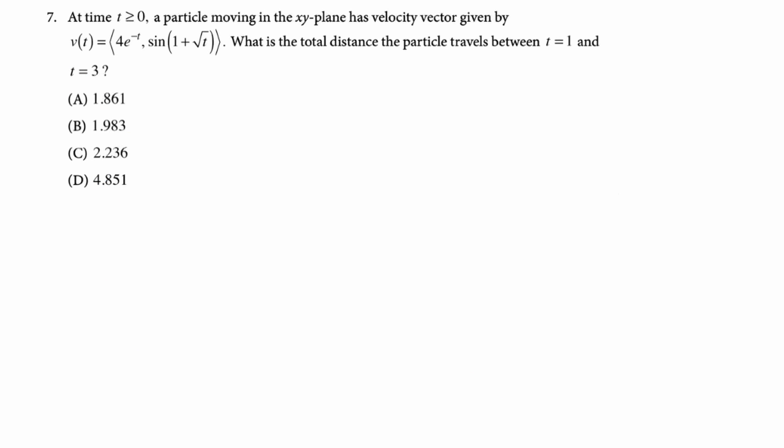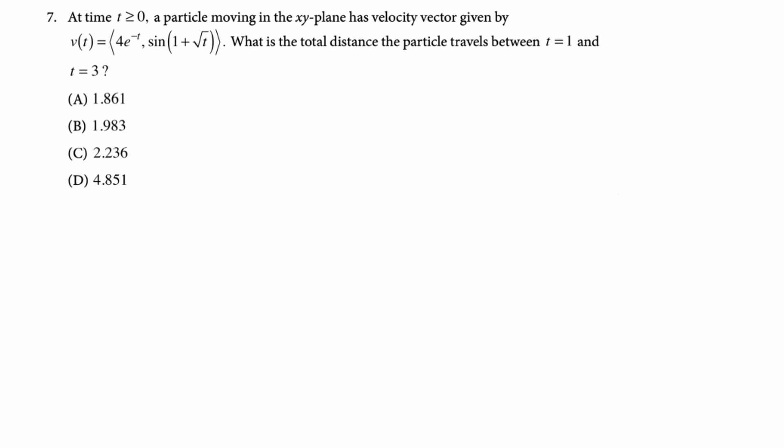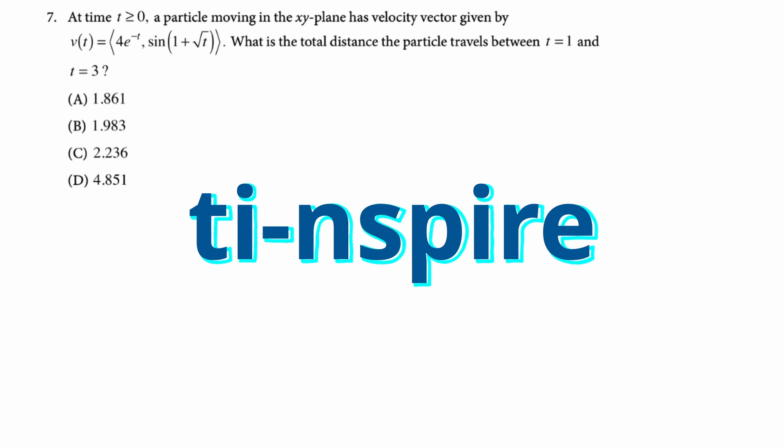Number seven. At time t greater than or equal to zero, a particle moving in the xy plane has velocity vector given by v of t equals 4e to the negative t comma sine of quantity one plus root t. What is the total distance the particle travels between t equals one and t equals three? This is definitely going to be a calculator problem. What I'm going to do is I'm just going to find the arc length. So parametric arc length is distance traveled when you have something moving according to parametric equations. We're given velocity, so we don't have to take any derivatives. We're just going to find arc length using this velocity function. Okay, so I'm going to switch over to the calculator. I'm going to type it all in and come back and box the answer.